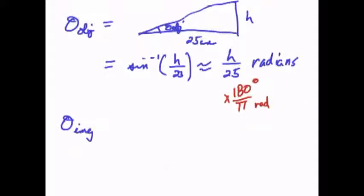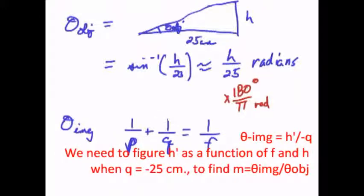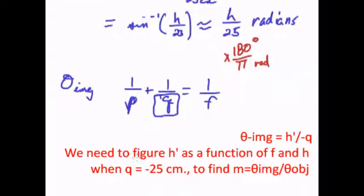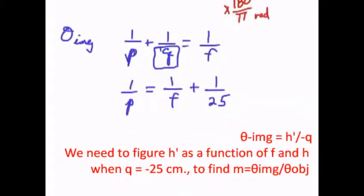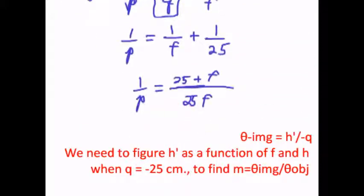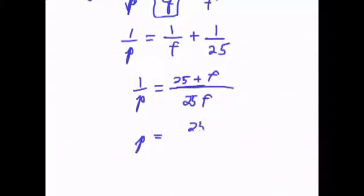But what about the theta of the image? In this case, you're going to be able to set q equal to negative 25 centimeters. So when you set that to negative 25 and add this to both sides, you get 1 over p equals 1 over f plus 1 over 25. Let's find a common denominator there which would be 25f and we'll have 25 plus f on the top equals 1 over p. And so p is going to be the reciprocal of that which is 25f over 25 plus f.